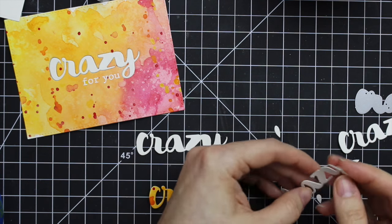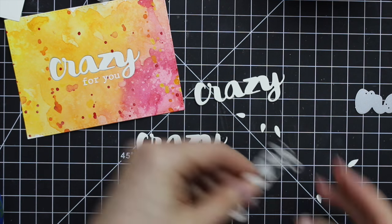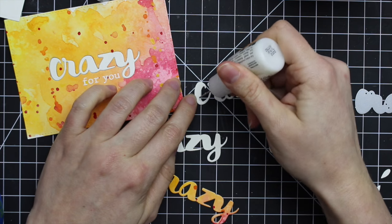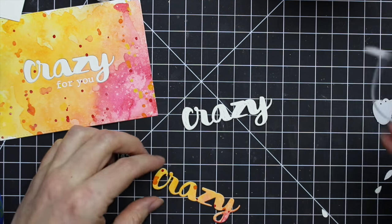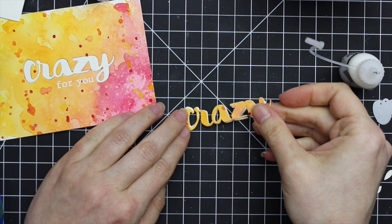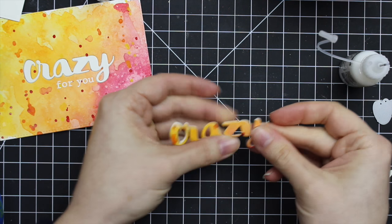You just never know. So rather be safe than sorry. So I used the multi-medium matte. And then I had three more plain die cuts. And I adhered all three together with the same multi-medium matte. And then I adhered the watercolor one to the top of that.